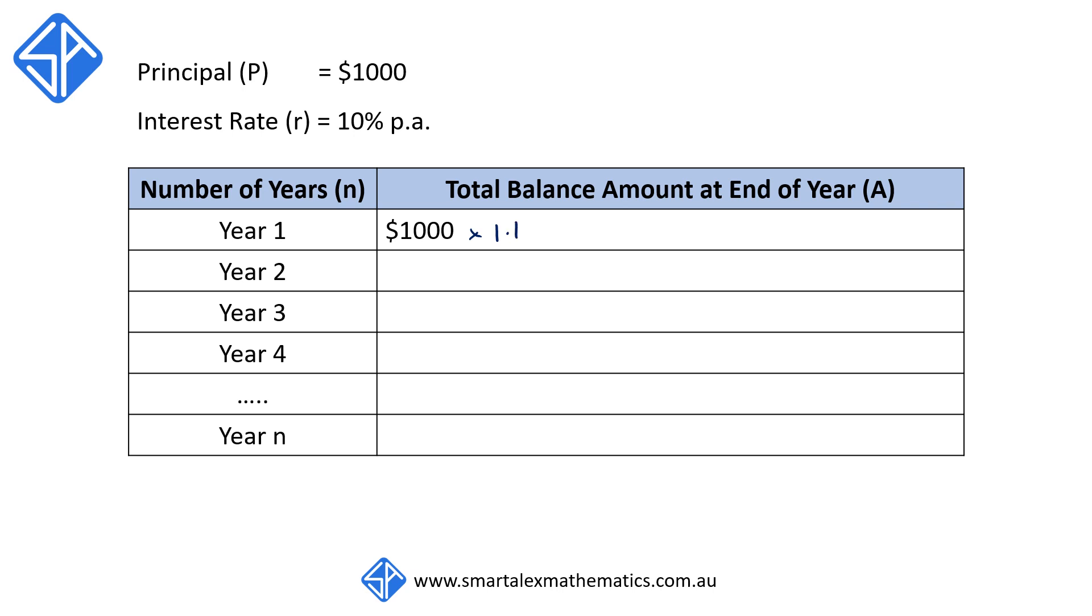In year two, we now start off with 1,000 times 1.1 at the beginning of the year. And this entire amount will also grow by another 10%, so we're going to multiply it by 1.1 again. This simplifies to 1,000 times 1.1 squared.